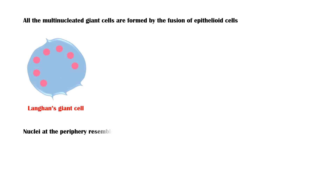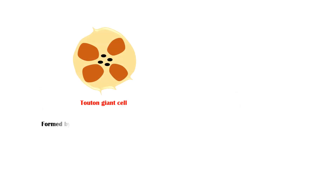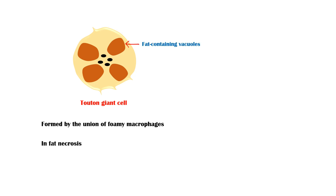All multinucleated giant cells are formed by the fusion of epithelioid cells. Langhans giant cells have their nuclei at the periphery of the cell, resembling a horseshoe, and are typically seen in tuberculosis. Foreign-body-type giant cells have randomly arranged nuclei and usually occur in foreign body granulomas. Touton giant cells are formed by the union of foamy macrophages in fat necrosis. In the periphery of the cell, there are fat-containing vacuoles, which push the nuclei towards the center of the cell.